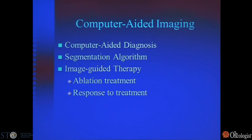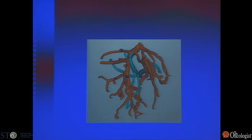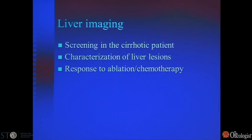All imaging is essentially computer-aided since the early 70s, but computer-aided diagnosis, segmentation algorithms, and image-guided therapy can be used to guide surgical ablation treatment, as well as assess response to treatment based on contrast dynamics curves. A rough segmentation of the hepatic vasculature shows the portal vascular system and hepatic venous system that can be extracted from images. Image fusion is also commonly done and will be touched on in the next talk.